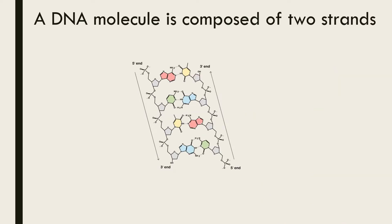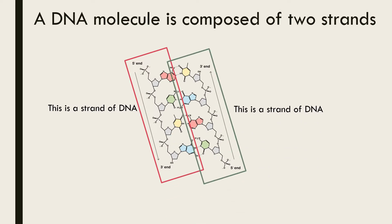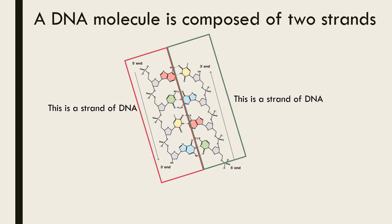As we can see in this diagram, a DNA molecule is composed of two strands. This is a strand of DNA and this is a strand of DNA. These strands are complementary to each other, which means that the opposing nitrogenous bases are always complementary. If one strand has an adenine base, the other strand will have a thymine base in the same position. Together these two strands make up the DNA molecule.